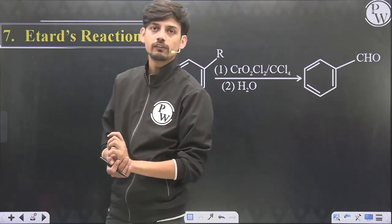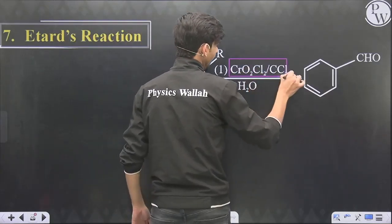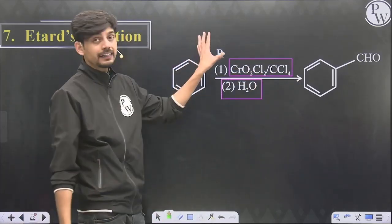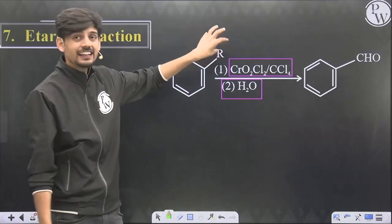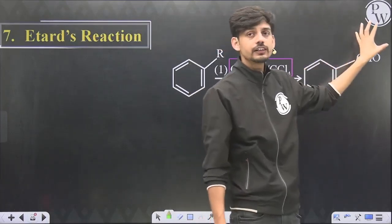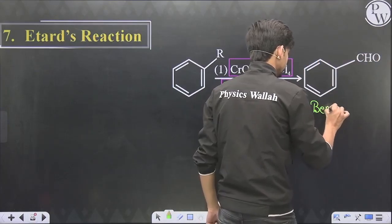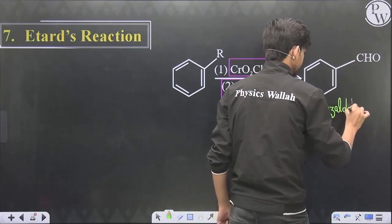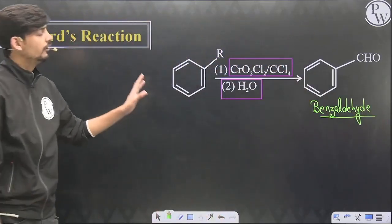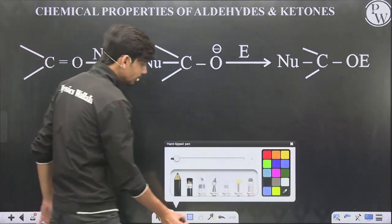Aromatic aldehydes are prepared using the Etard reaction, which is chromyl chloride oxidation. We use chromyl chloride in the first step and water in the second step (hydrolysis). Irrespective of the length of the alkyl chain — whether methyl, ethyl, or propyl — all chains are converted into only a –CHO group. So we always get benzaldehyde.